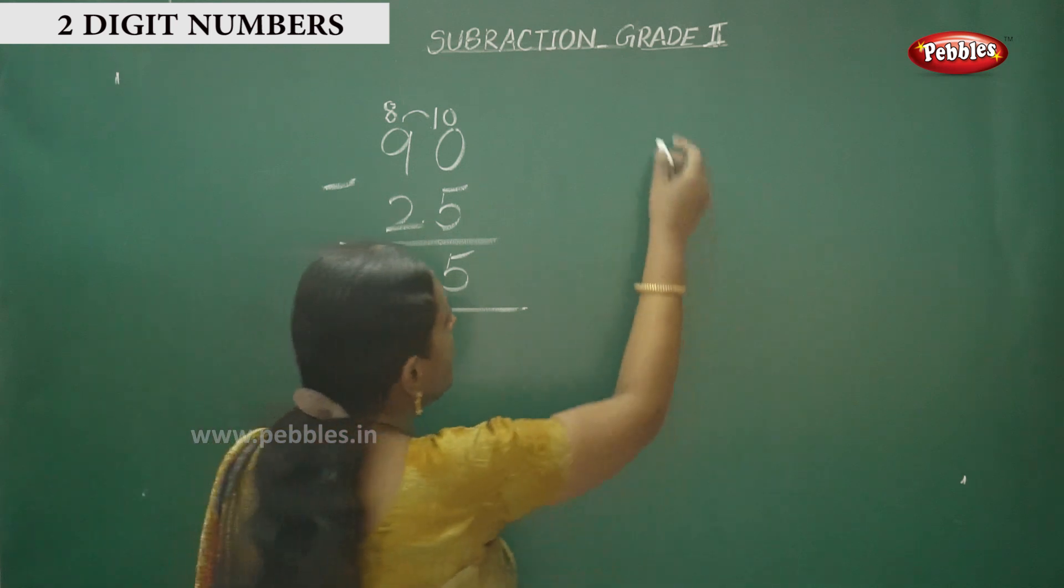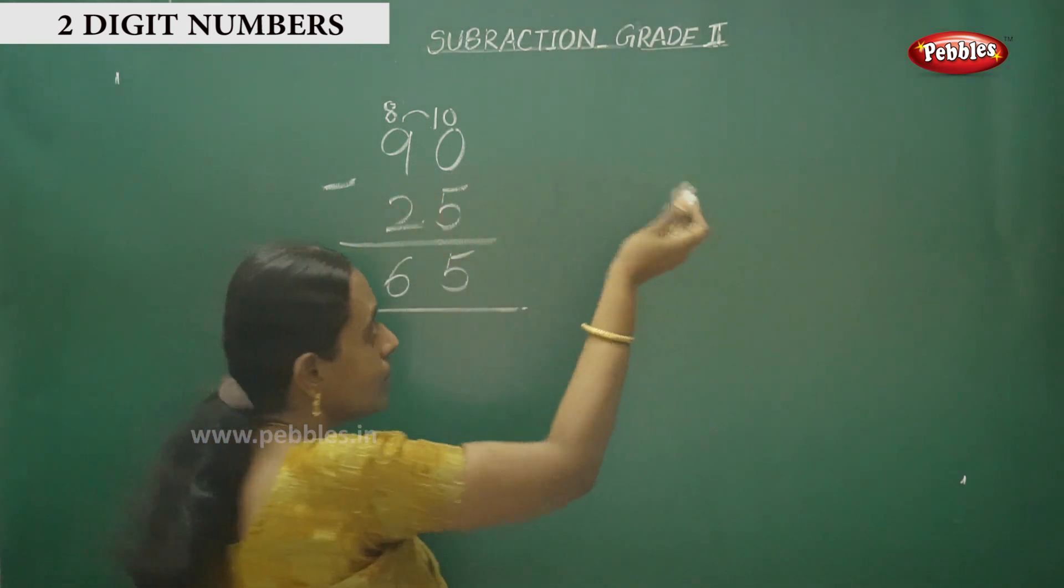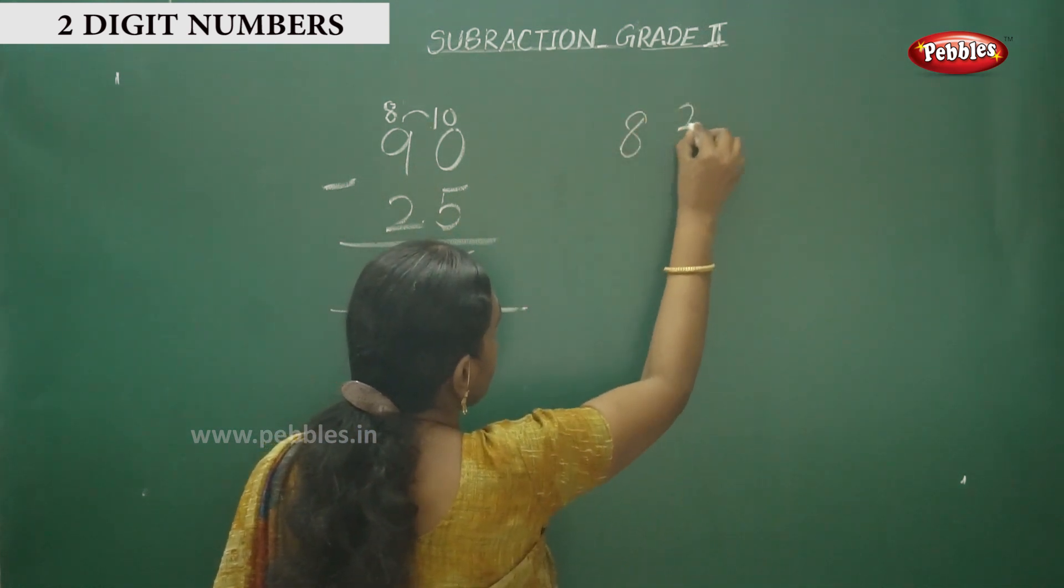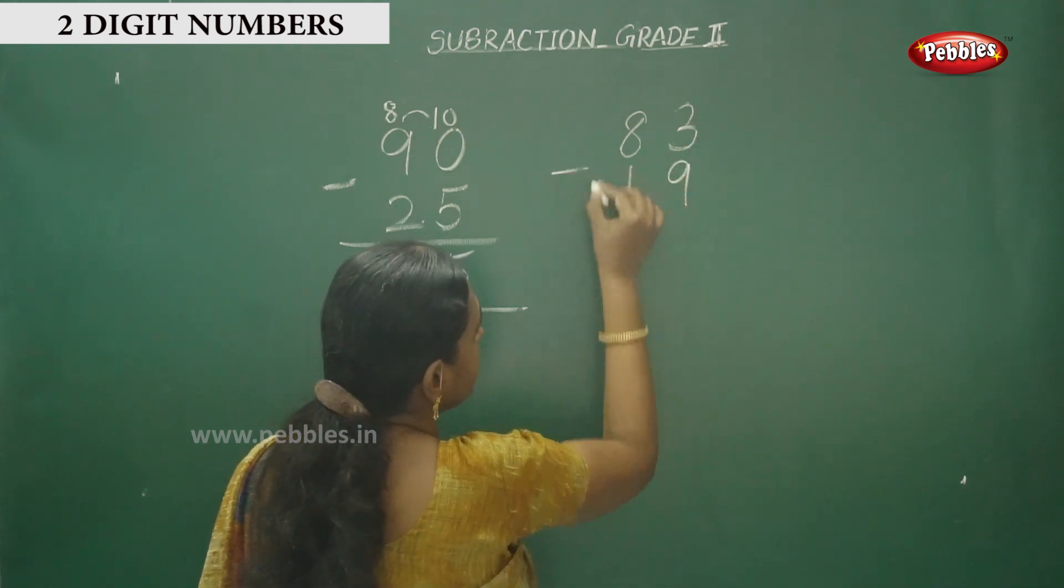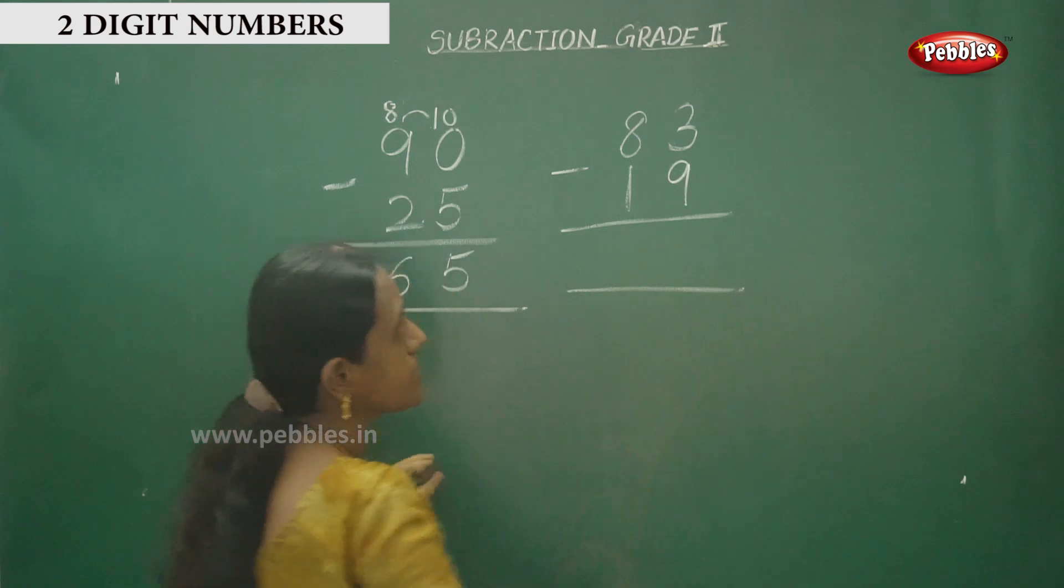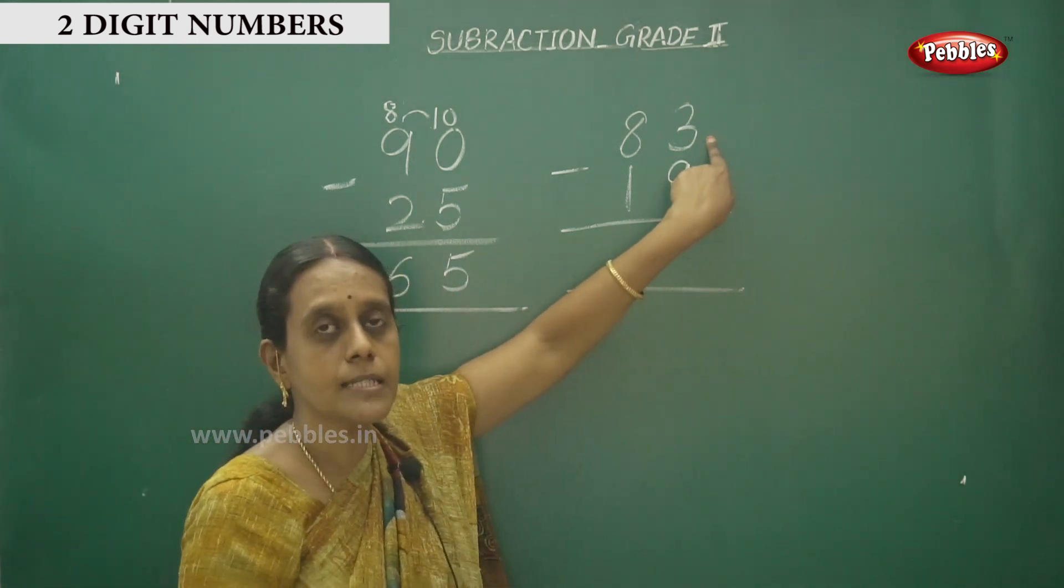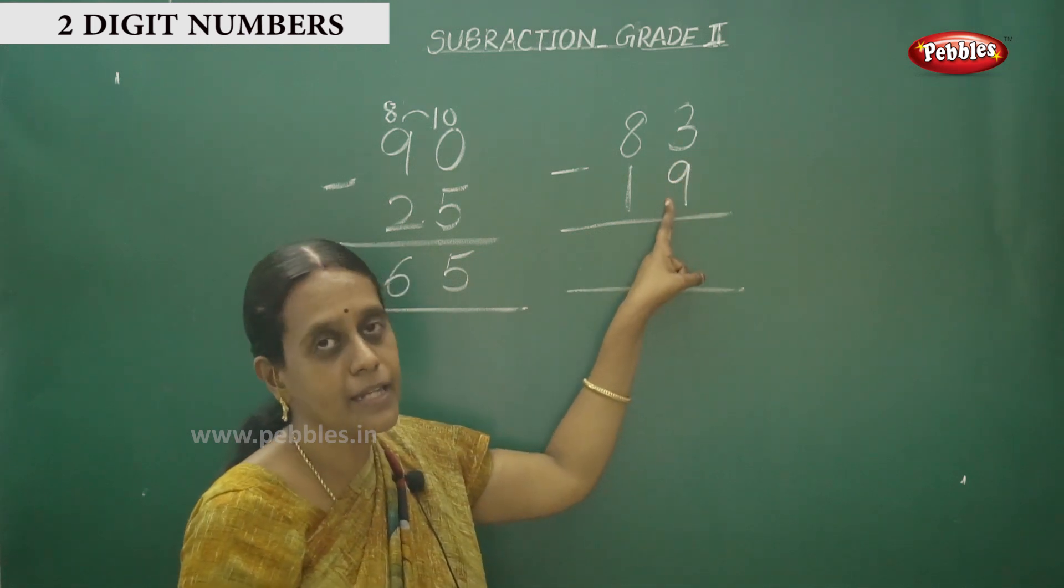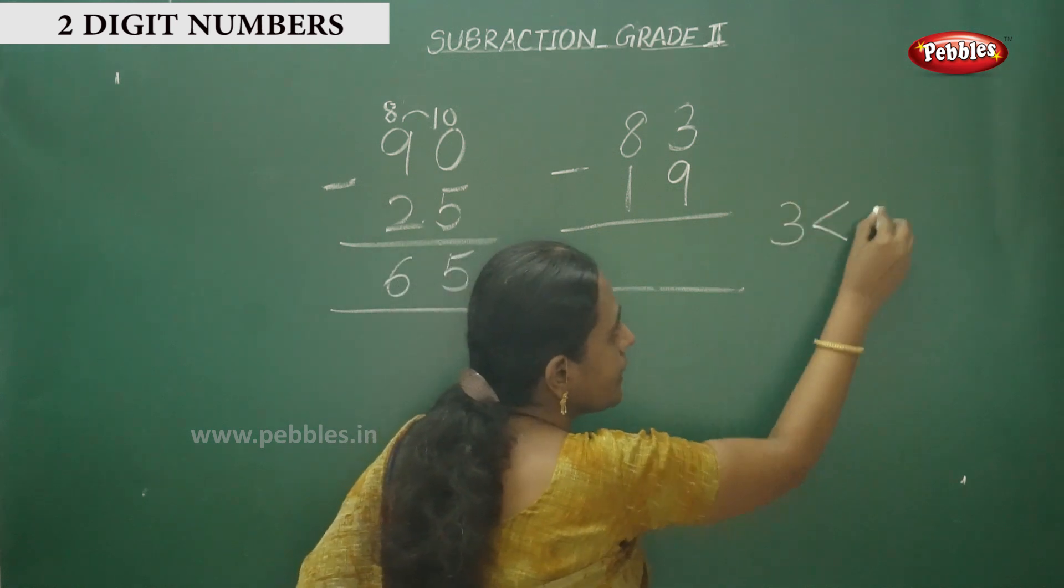Let us see another sum for you. I will discuss another number. That is 83 and this is 19. Understand this number? Here, observe the top first number. This is smaller number, 3. Comparatively 9 - 3 is less than 9.